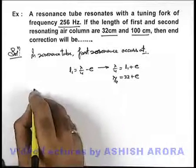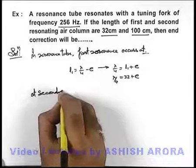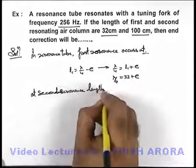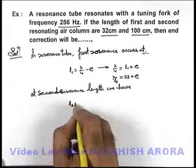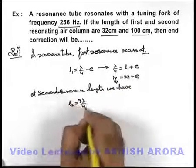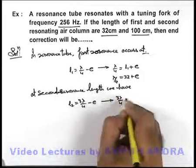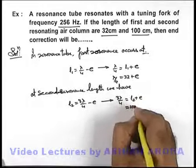And at second resonance length we have L2, we can write 3 lambda by 4 minus e, which gives 3 lambda by 4 is equal to L2 plus e, which is 100 plus e.